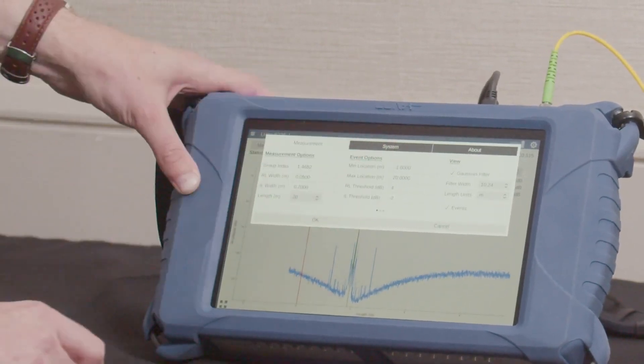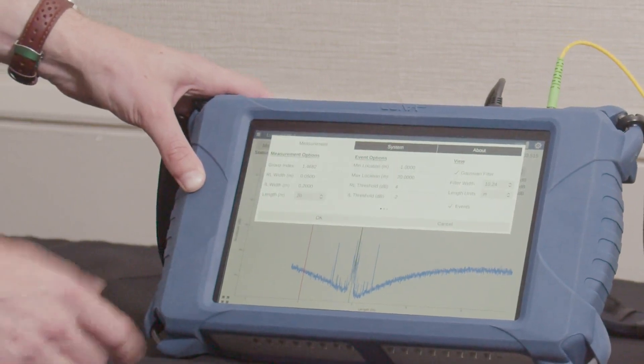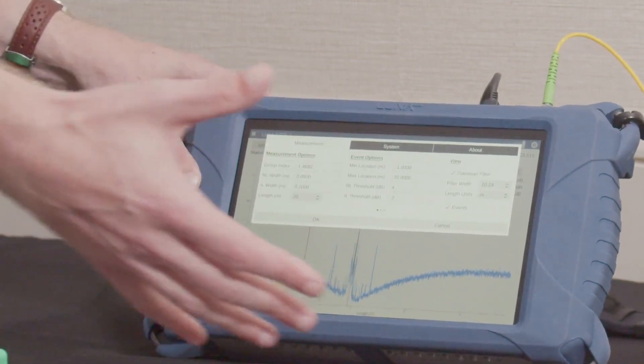We can define the minimum and maximum locations that we'd like to search. This is useful if you have fiber jumpers outside that you don't want to include.